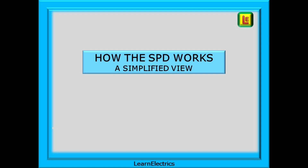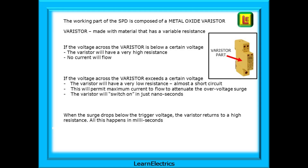We will focus on Type 2 devices, the most common type we install. The working part of the SPD is composed of a varistor — a mix of materials with very special resistance properties. If the voltage across the varistor is below a certain threshold, it will have a very high resistance and no current will flow through it. But if the voltage exceeds that threshold, the varistor will suddenly have a very low resistance — almost a short circuit — permitting a high current to flow, which attenuates or suppresses the overvoltage surge. The varistor switches on in just nanoseconds, shunting the surge to earth, and returns to high resistance once the surge drops below the trigger voltage — all within just milliseconds.